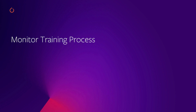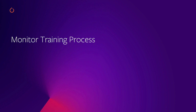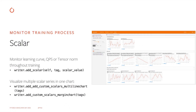The most common use case for TensorBoard is to monitor the training process. This includes using the scalar API to monitor the model learning curve, QPS, or CPU utilization throughout training. You just need to pass in the tag name and the scalar value to the add_scalar API. You can also visualize multiple scalar series in the same chart by using the multi-line chart or the margin chart API.